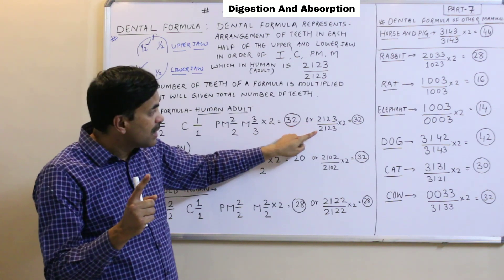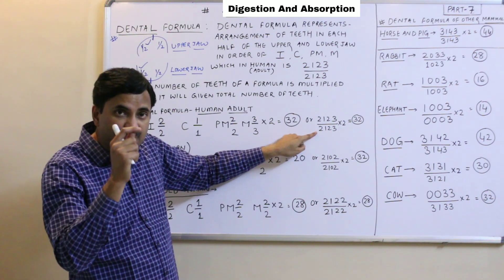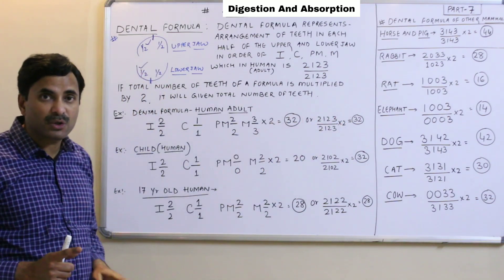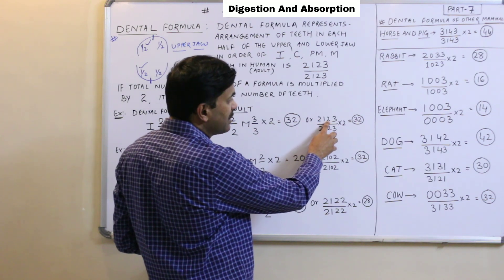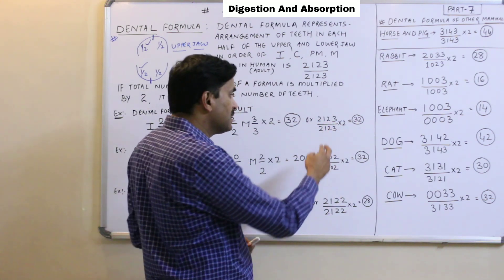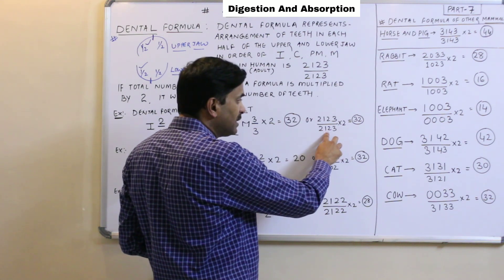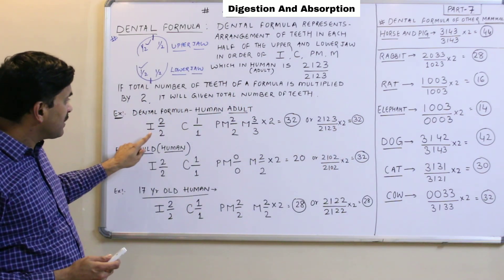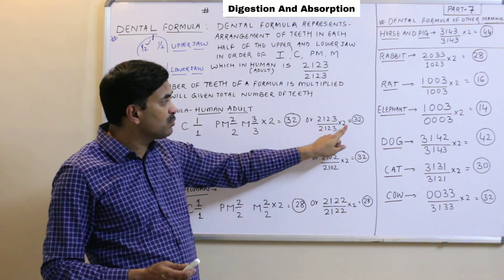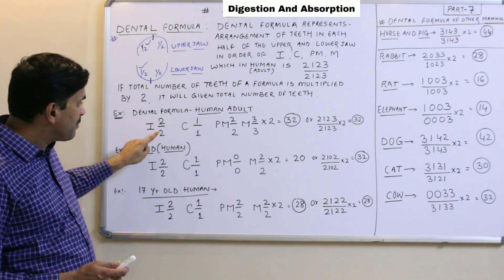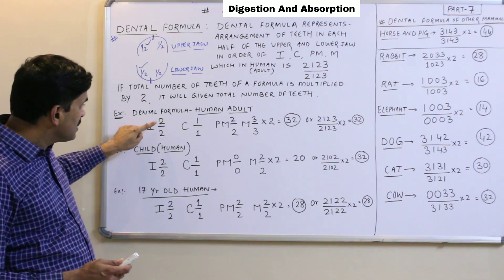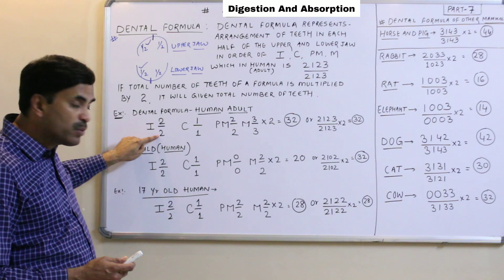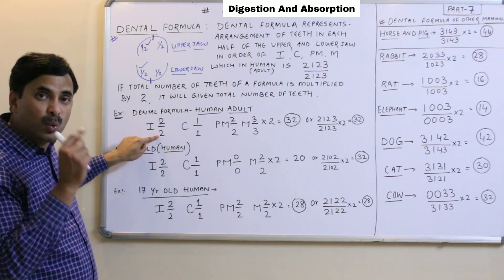The upper jaw has 2+1+2+3 = 8 teeth in one half, giving 16 for the full upper jaw. The same applies to the lower jaw — 16 teeth. So 16 plus 16 equals 32 total. In the formula, incisors are written as 2 upon 2, meaning 2 incisor teeth are present in one half of the upper jaw and 2 incisors in one half of the lower jaw.